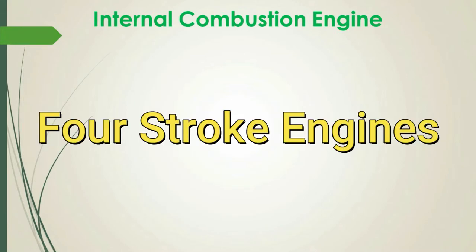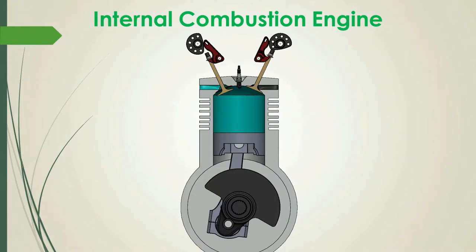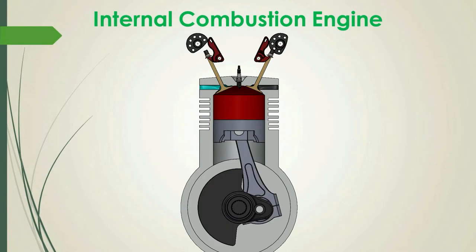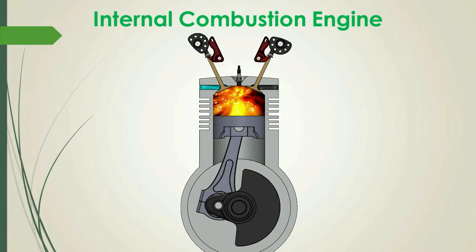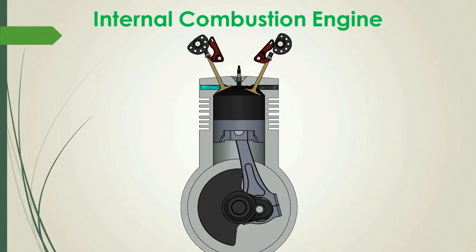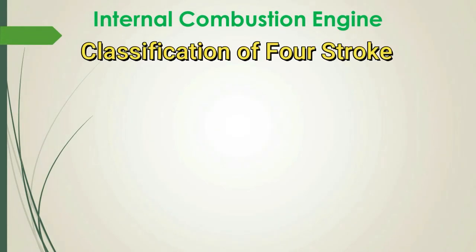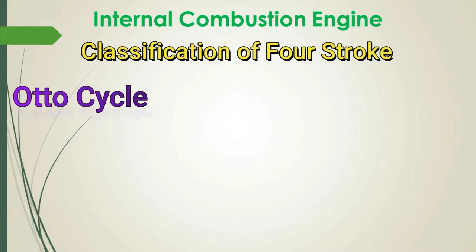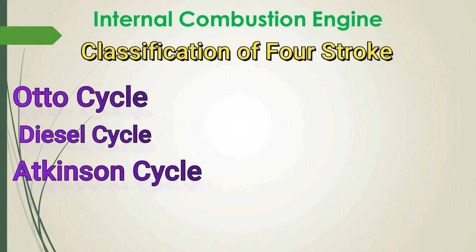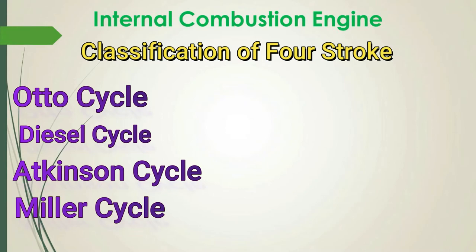The four-stroke engine requires four strokes of the piston to complete one cycle of power. The first stroke is the intake stroke, the second is the compression stroke, the third is the power stroke, and the fourth is the exhaust stroke. The four-stroke engine can be categorized into the Otto cycle, diesel cycle, Atkinson cycle, and Miller cycle.